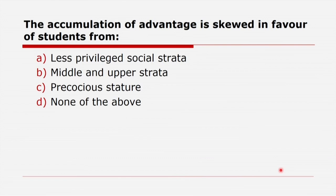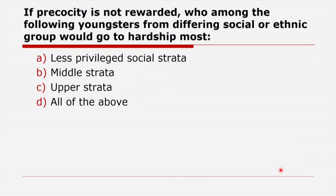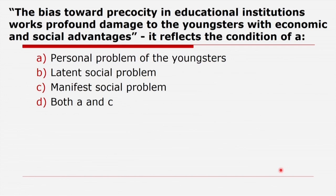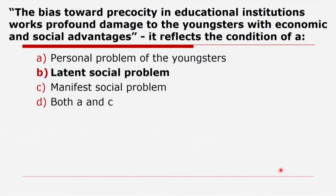The accumulation of advantage is skewed in favor of students with precocious stature. A youngster from the less privileged social strata would face the most hardship when precociousness is not rewarded. The bias towards precociousness in educational institutions works profound damage to youngsters with economic and social disadvantages. This reflects a latent social problem.